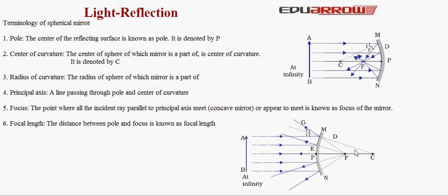Radius of curvature: the radius of the sphere of which the mirror is a part is known as radius of curvature. In case of concave mirror, the distance CP is the radius of curvature. In case of convex mirror, this distance CP is also the radius of curvature.